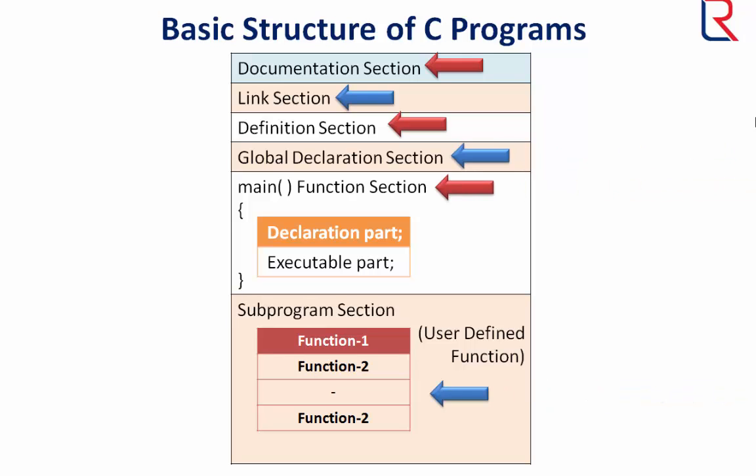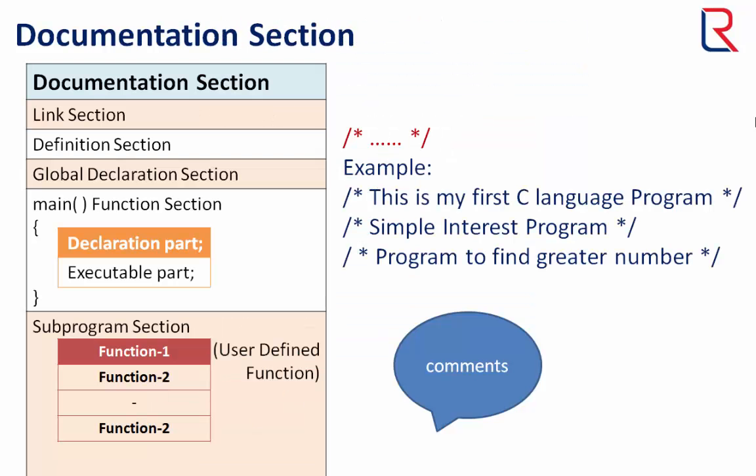So let's discuss these in detail and start with documentation section. The documentation section consists of a set of comment lines giving the name of the program, the author, and other details which the programmer would like to use later.